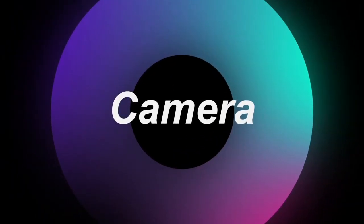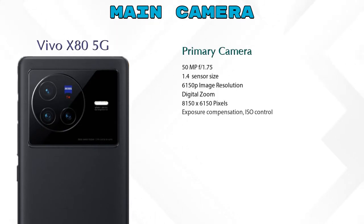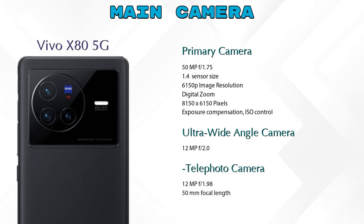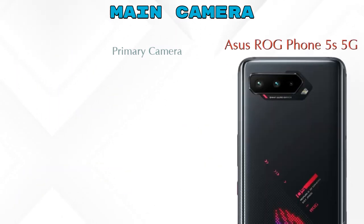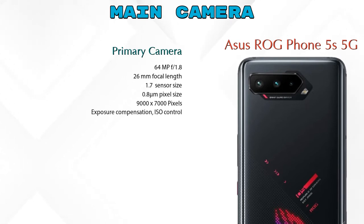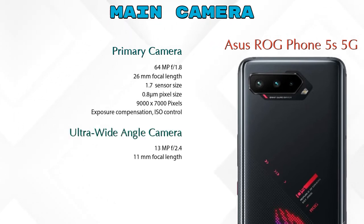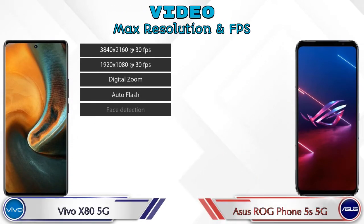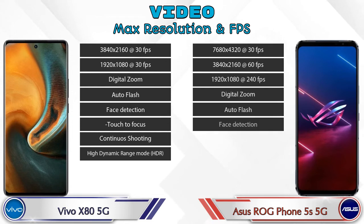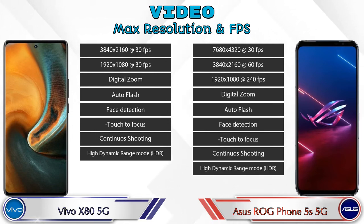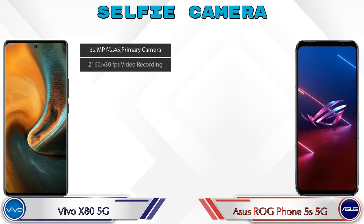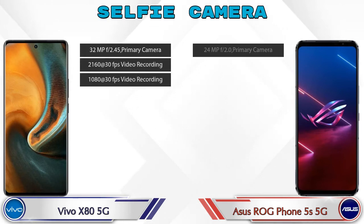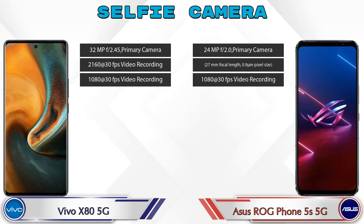Now let's look at the camera. The Vivo X85G has three rear cameras: a primary camera, an ultra-wide angle camera, and a telephoto camera. The ROG Phone 5S 5G also has three rear cameras: a primary camera, an ultra-wide angle camera, and a macro camera. For video, the Vivo X85G has 8 and the ROG Phone 5S 5G has 9 different feature options. Both phones have a single front selfie camera with three different features available.